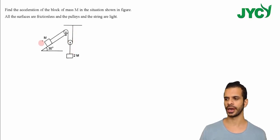There are two blocks and two pulleys as shown in the figure. Block A is kept on this incline which has an inclination of 30 degrees. The question asks to find the acceleration of the block of mass M.